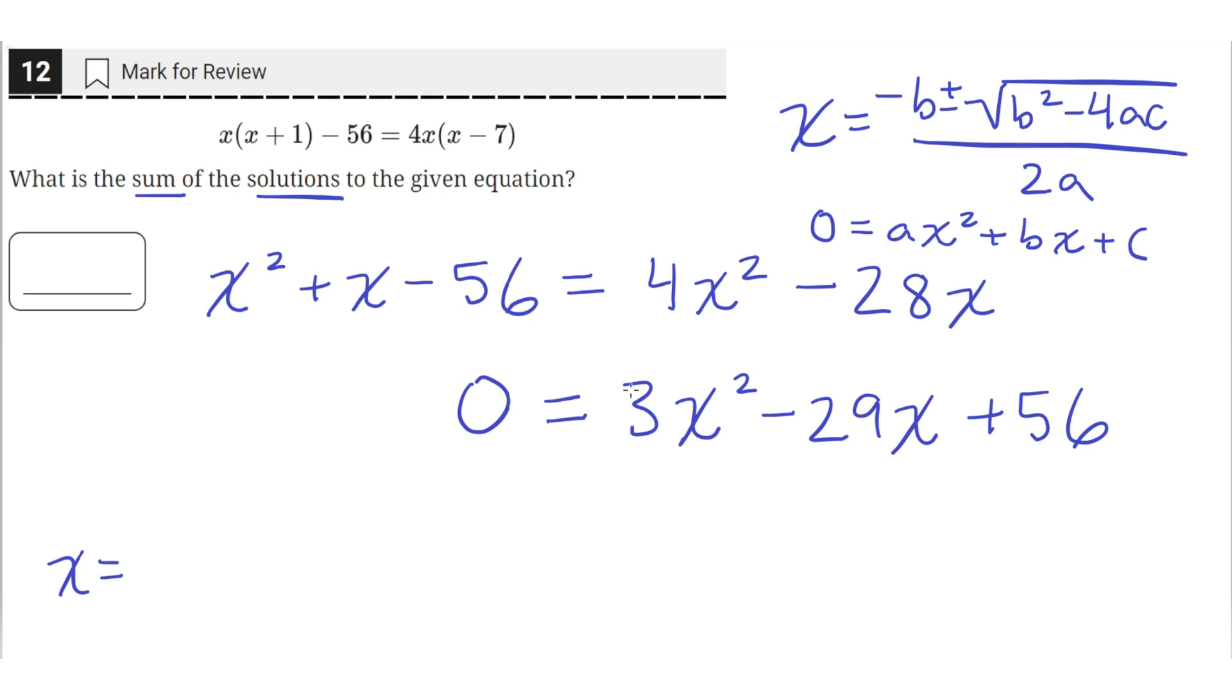In this case, a is 3, b is negative 29, and c is 56. So let's plug these values of a, b, and c into the quadratic formula.